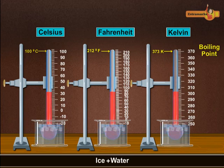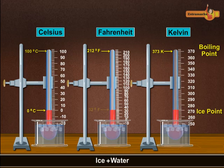After thermal equilibrium is attained, the readings of the thermometers are 0 degrees Celsius for the Celsius scale, 32 degrees Fahrenheit for the Fahrenheit scale, and 273 Kelvin for the Kelvin scale.